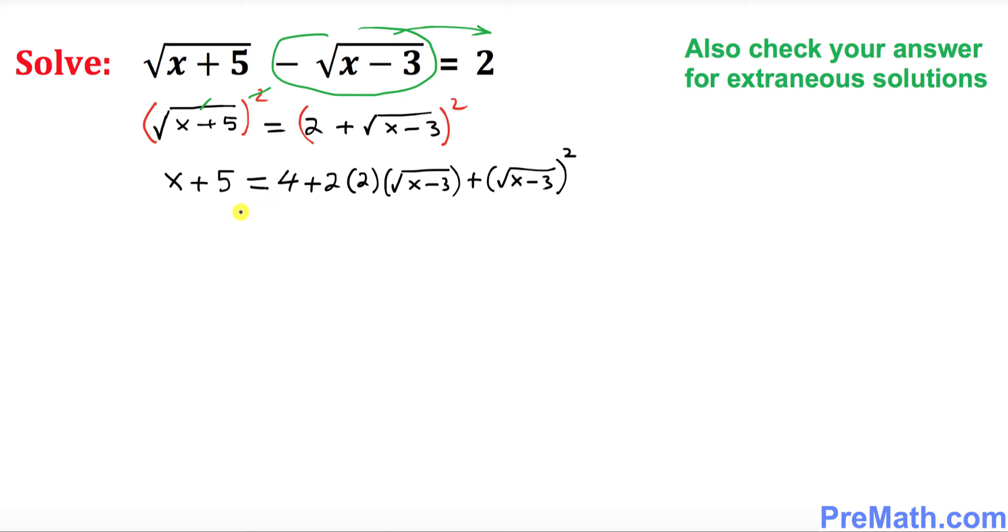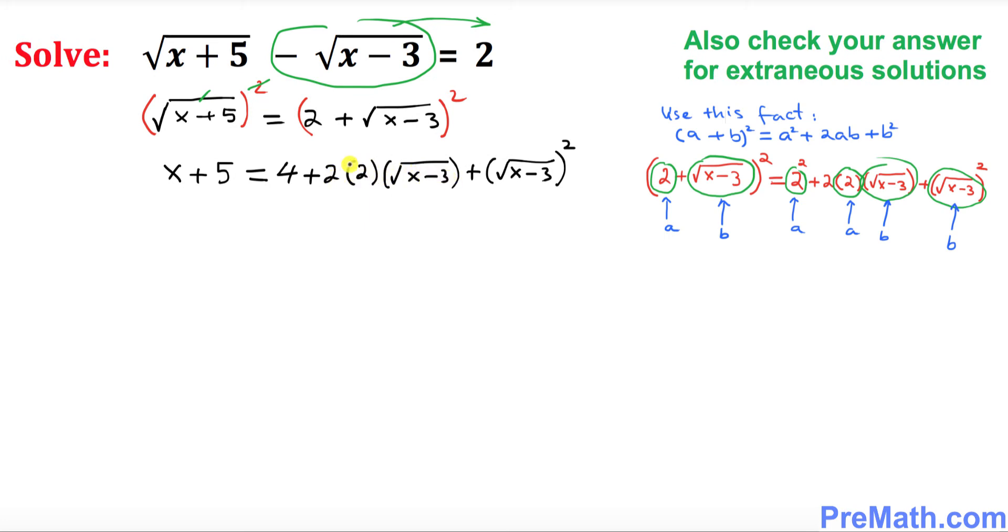So the next step is and by the way if you are not sure how we did the right hand side part here I use the fact you can see step by step how I did it. So let's go ahead and simplify so this is going to become x plus 5 equal to 4 plus 2 times 2 is 4 times square root of x minus 3. Once again this square and square root they undo each other so we simply got x minus 3. So far so good.